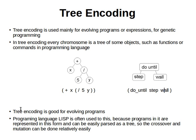The tree encoding is good for evolving programs. The programming language LISP, for example, is often used for this because programs in it are represented in this form and can be easily parsed as a tree. So the crossover and mutation can be done relatively easily.